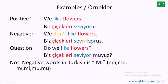In the question form, the word 'do' is shown by 'mu' in Turkish — a suffix or tag used to make a sentence into a question. 'Çiçekleri seviyor muyuz?' means 'Do we like flowers?' Biz, çiçekleri, seviyor muyuz? If your answer is yes: 'seviyoruz.' If your answer is no: 'hayır, sevmiyoruz.'